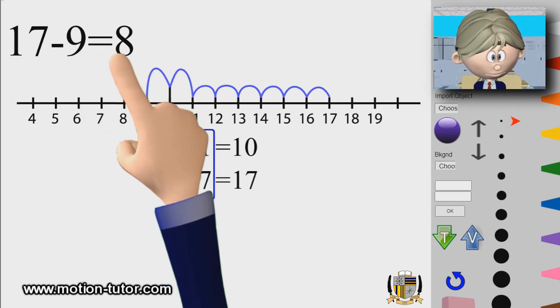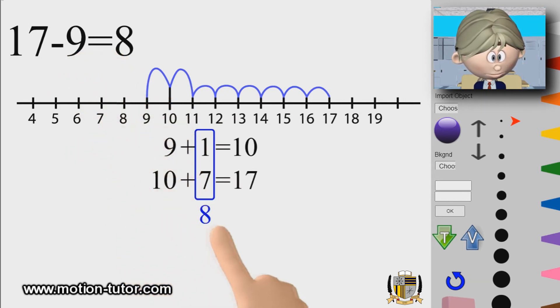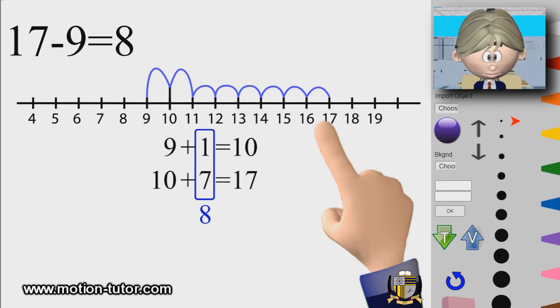That's the difference between them and 17. That's why when we do subtraction the answer is called the difference, because it's the difference between 9 and 17.